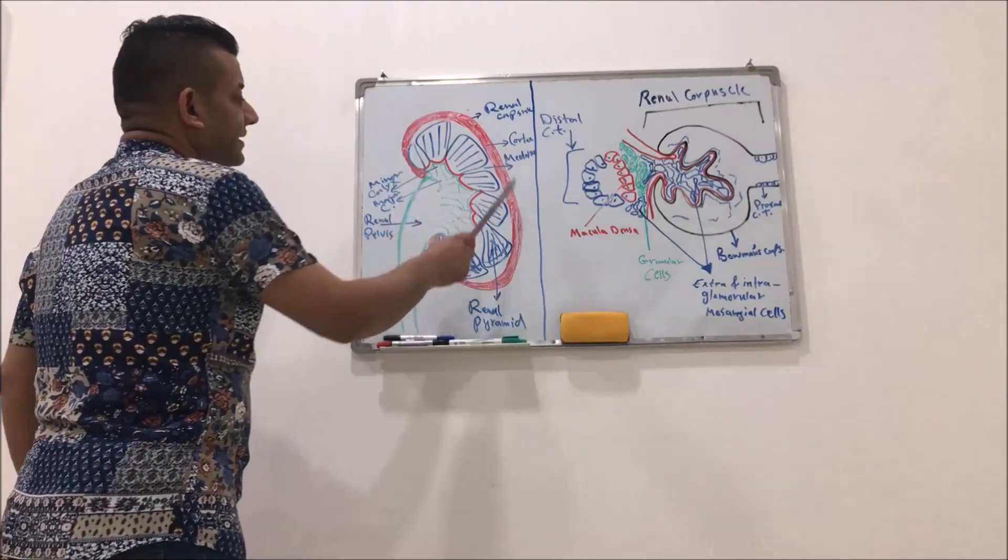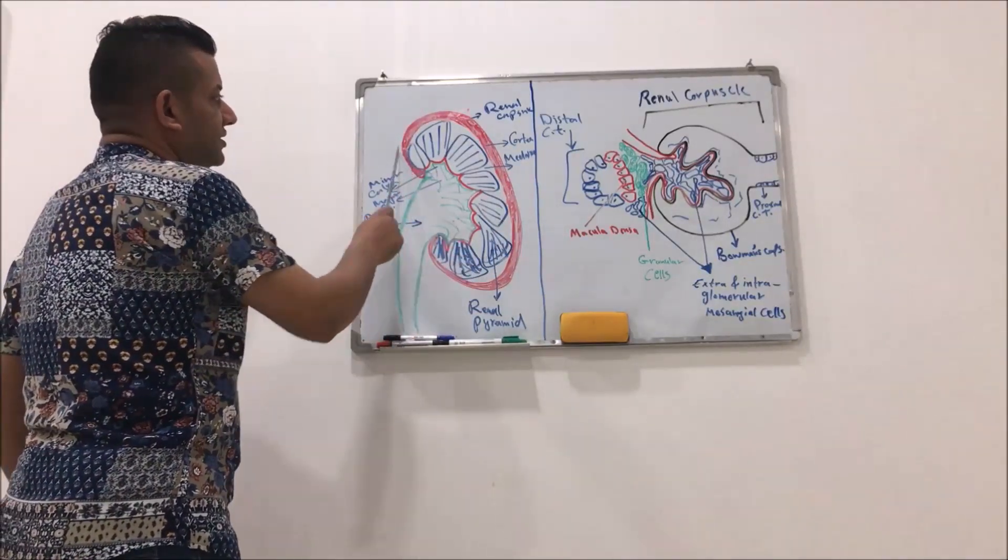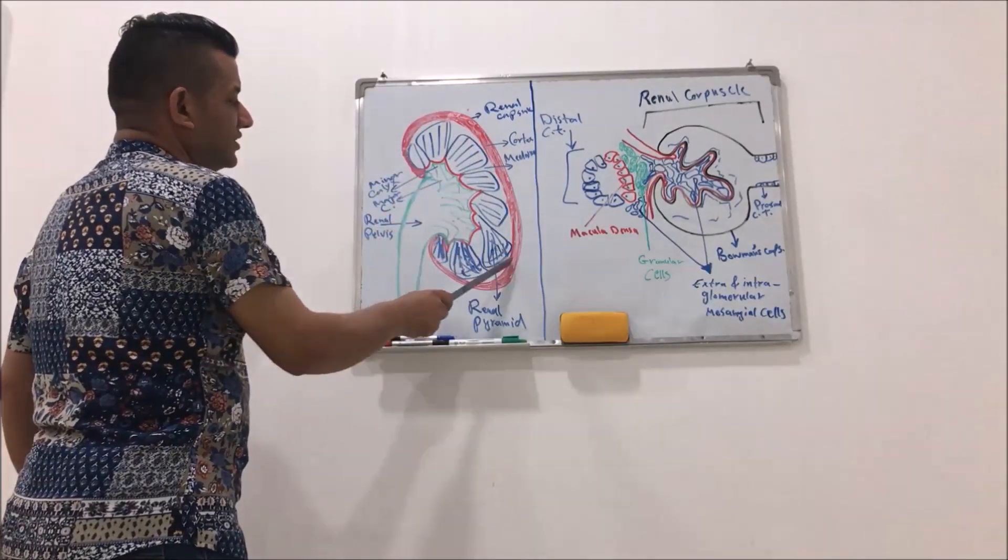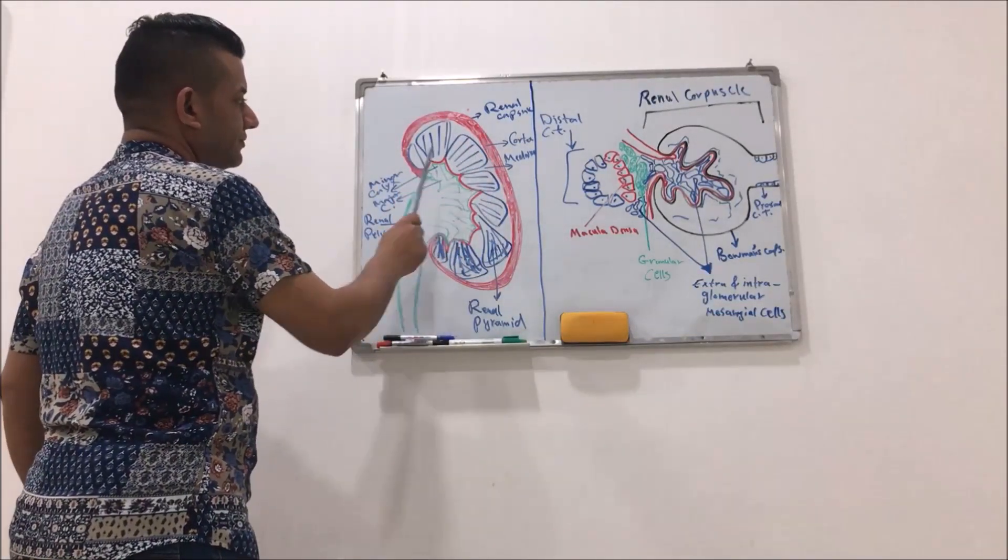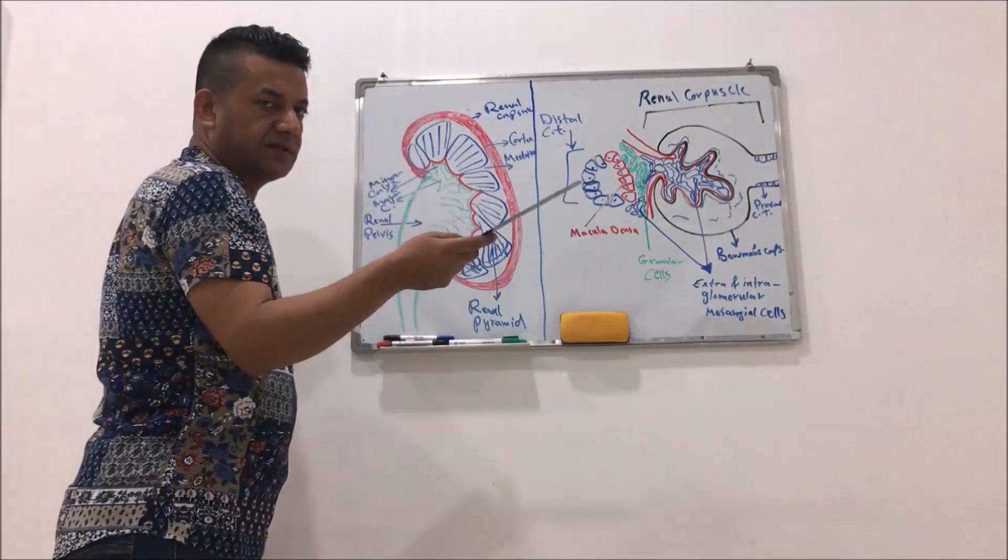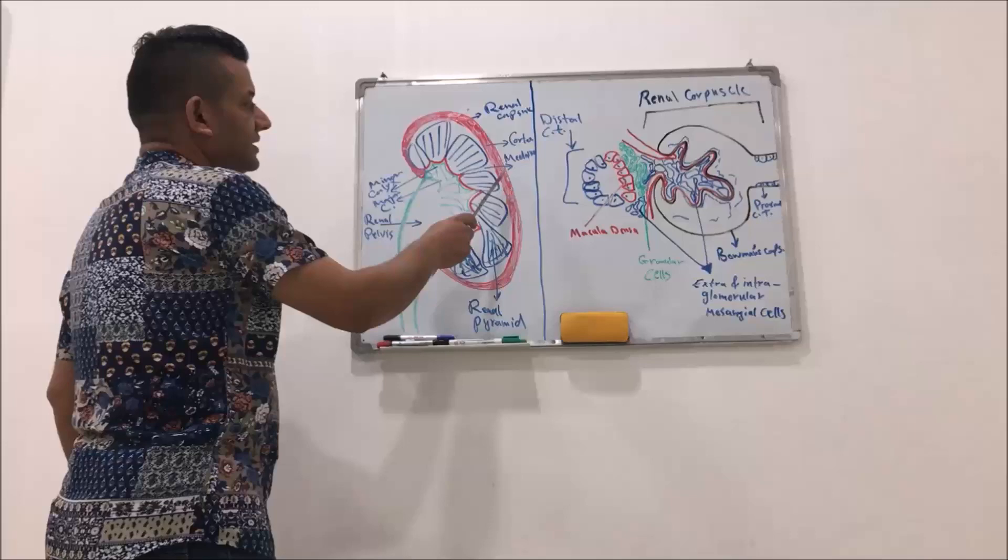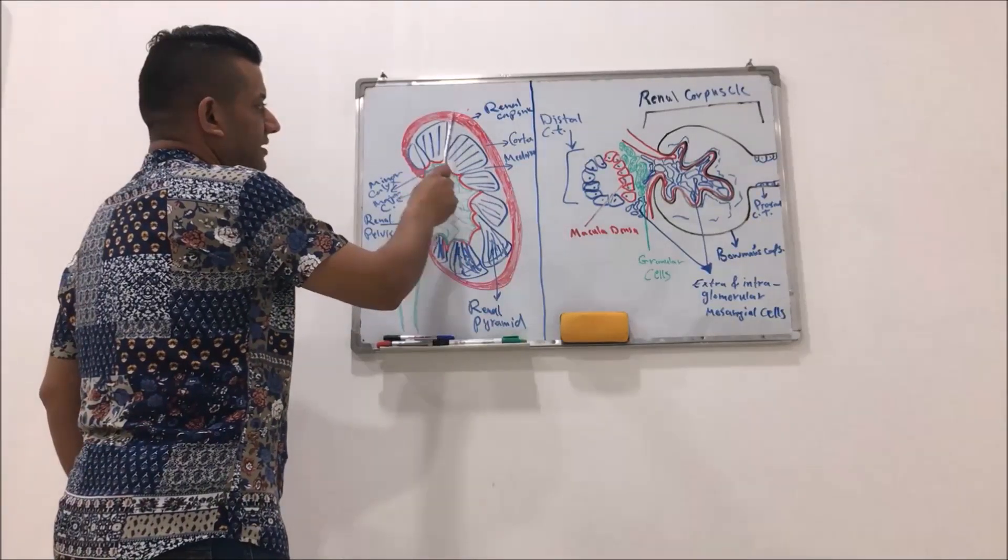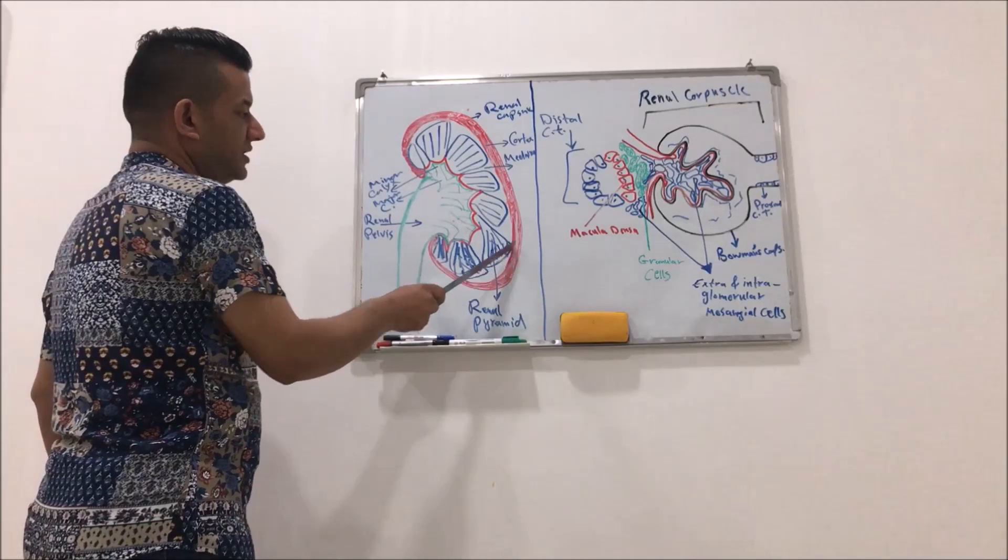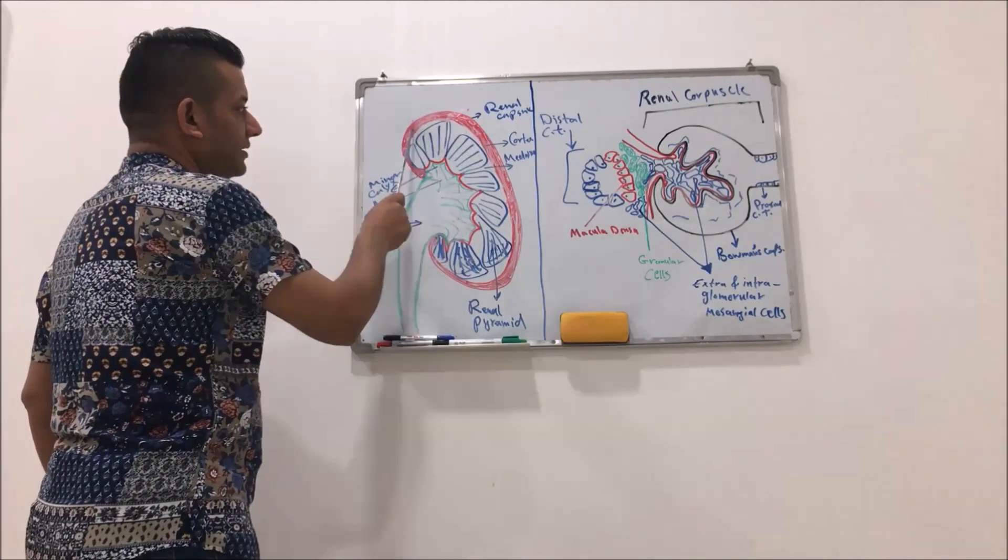Anatomically, the kidney consists of two major areas. The first one from the outermost surface is the cortex. As you see here, the cortex, which is highlighted by the red column.